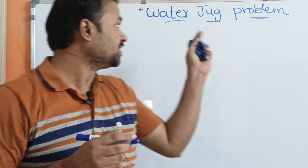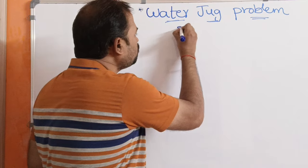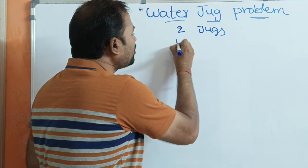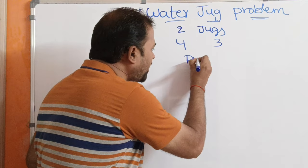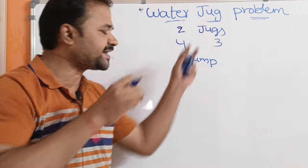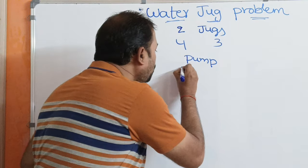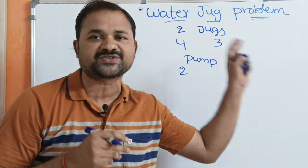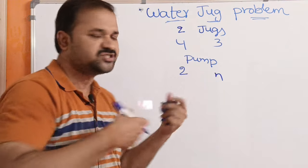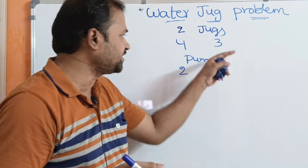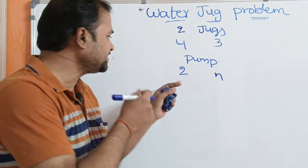Now let us discuss the water jug problem in artificial intelligence. We are given two jugs: one is a 4-liter water jug, and the second is a 3-liter water jug. We can use a pump to fill the jugs with water. Our aim is to get 2 liters of water in the 4-liter jug. There is no constraint on the second jug, so it may contain 0, 1, 2, or 3 liters. This is the goal state.